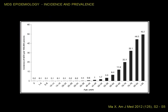In this video on myelodysplastic syndromes, I would like to discuss some aspects of the epidemiology of the disease. Epidemiology literally means 'that which is upon the people' — a study of what is upon the people — coming from the Greek words 'epi' meaning upon, 'demos' meaning people, and 'logos' meaning a study of. Our interest today is specifically in the incidence and the prevalence of this condition.